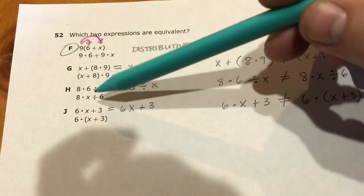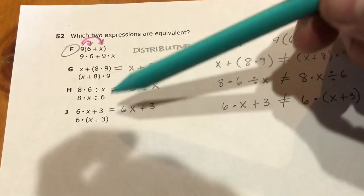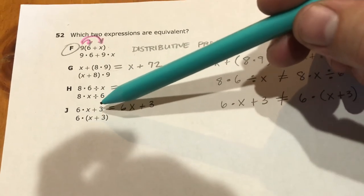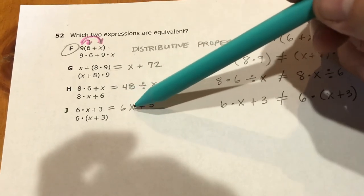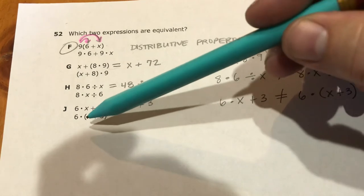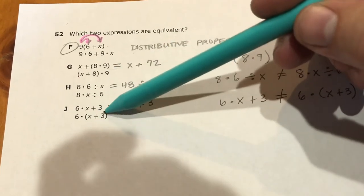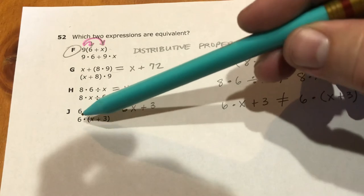And down here, 6 times (x + 3), the best you can do is maybe rewrite it without the symbol, 6 times (x + 3). This is not 6 times (x + 3), it's 6 times x, and it's also 6. It's 6 times x plus 6 times 3. So this is the distributive property also, so those don't match either.